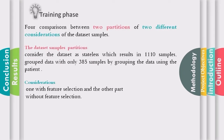For the training phase, we performed a comparison between two different considerations. We take the dataset as stateless, considering 1,110 samples, and also consider the data as group data with 385 samples grouped by calculating the mean value of each column. Additionally, each consideration is tested with and without feature selection, as we are mainly interested in the vital signs.